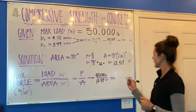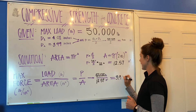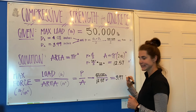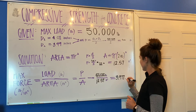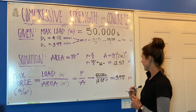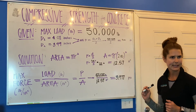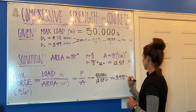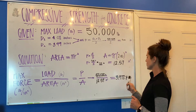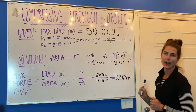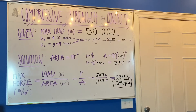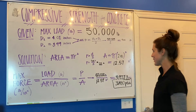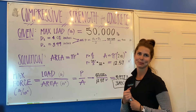50,000 divided by 12.57 gives us approximately 3,977 PSI. We're going to round it up to the nearest ten. If you have any questions or comments, please feel free to chat us up.